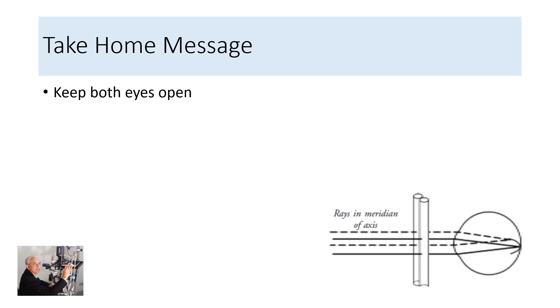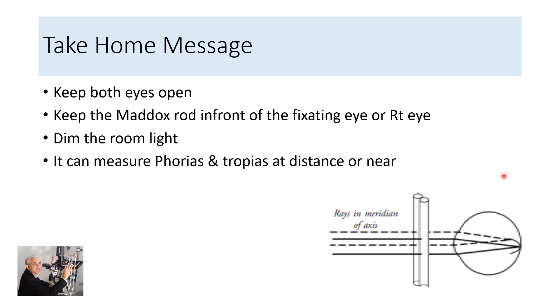Take home message is keep both eyes open while doing the test, keep the Maddox rod in front of the fixating eye or the right eye, dim the room light so that the fixating light is the major light which is available in the room. It can measure phorias and tropias at distance or near, while a Maddox rod measures most of the phorias at near.